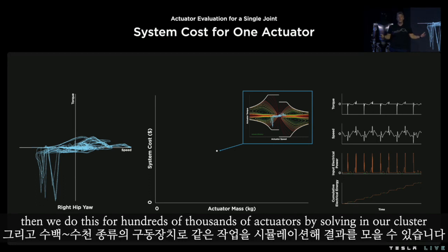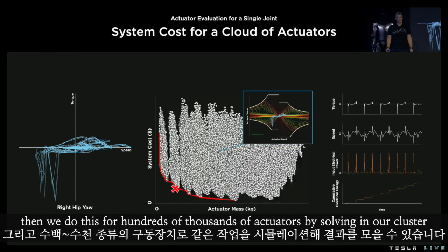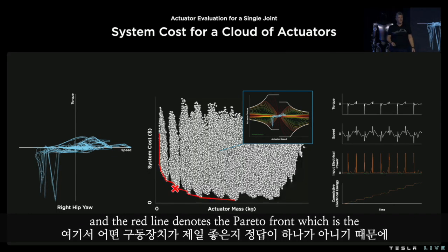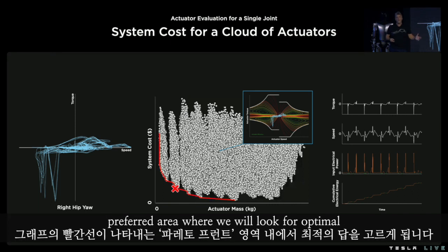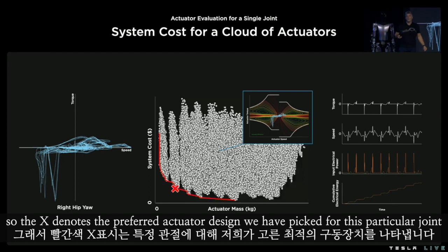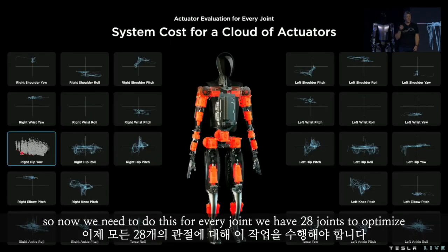We do this for hundreds of thousands of actuators by solving in our cluster. The red line denotes the Pareto front, which is the preferred area where we look for the optimal. The X denotes the preferred actuator design we have picked for this particular joint. Now we need to do this for every joint — we have 28 joints to optimize.